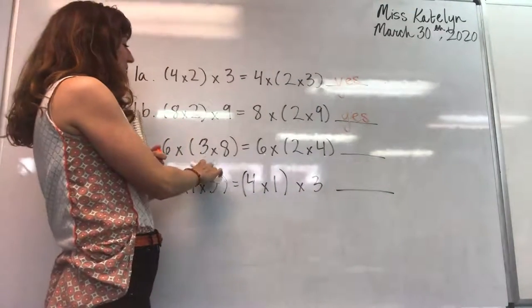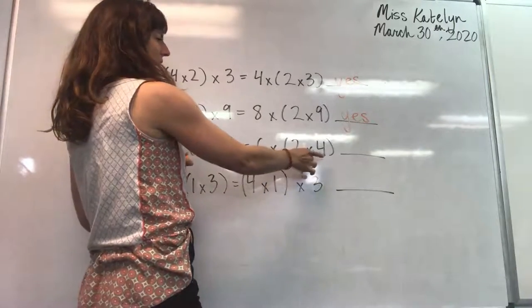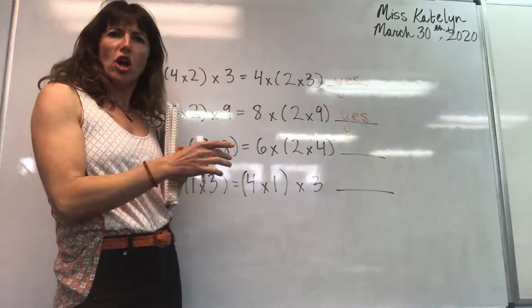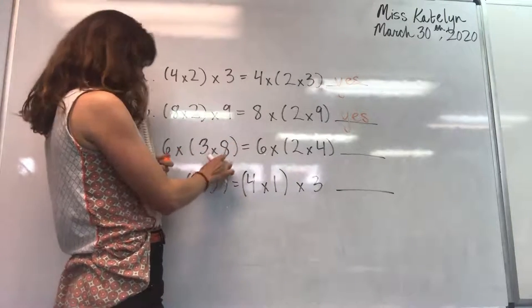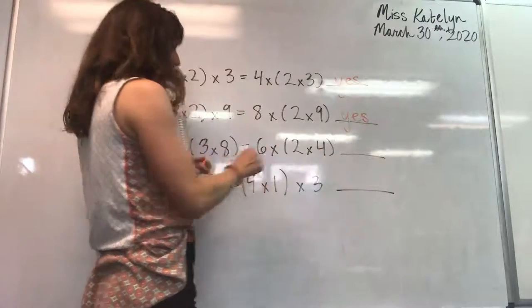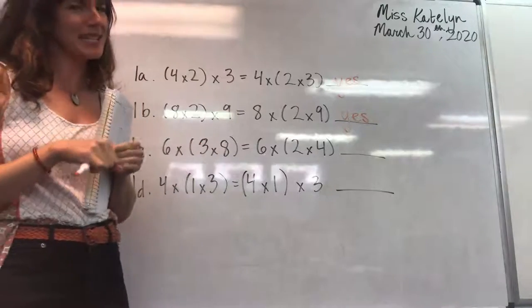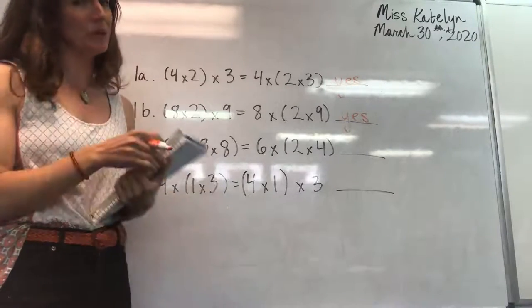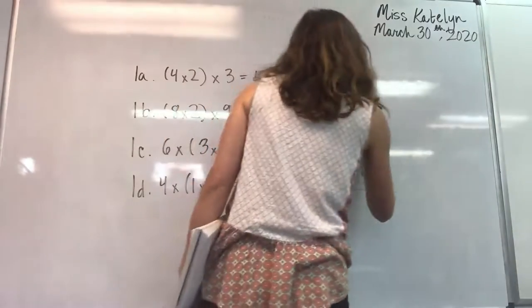Six times three times eight and six times two times four. What? Wait, wait, wait, wait. Six times three times eight and six times two times four. I don't think we're multiplying the same numbers on both sides of that equal sign. So I'm going to have to say, no, we're not going to get the same answer. No.